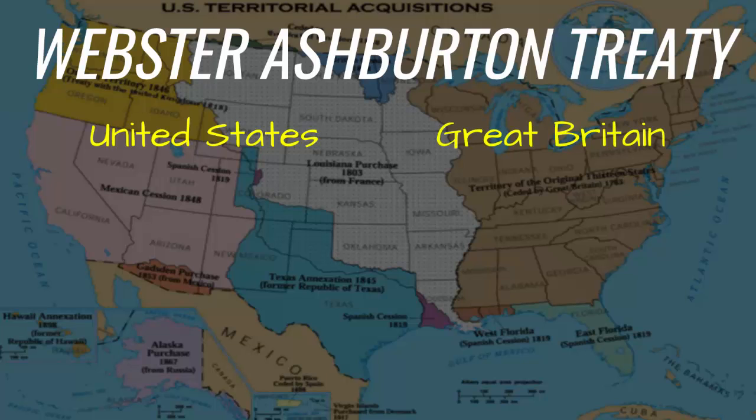This treaty was negotiated between the U.S. Secretary of State, Daniel Webster, and First Baron Ashburton, Alexander Baring of Britain.